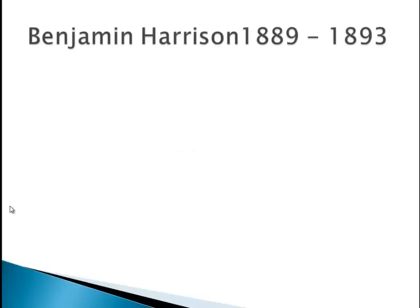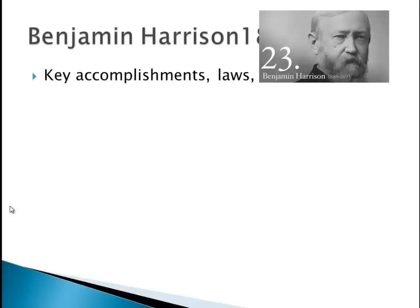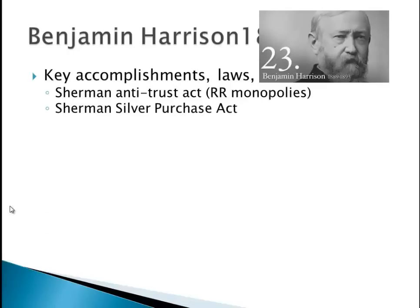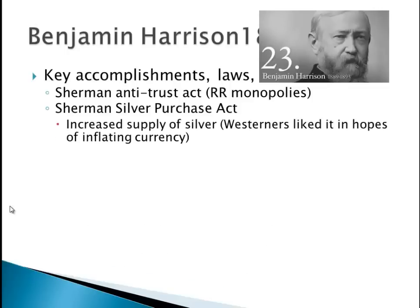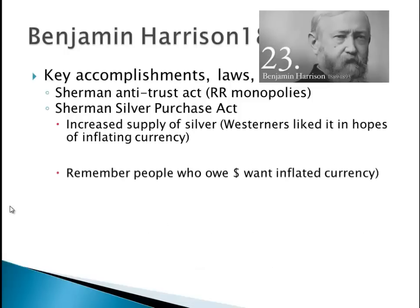Now we're going to talk about government of the 1890s. We have Benjamin Harrison — his grandfather, remember, was William Henry Harrison, Tippecanoe and Tyler too, the election of 1840. Key accomplishments under him: the Sherman Antitrust Act, which we talked about in chapter 25 — the first time the government ever tries to regulate an industry, and that industry is railroads. The other thing is the Sherman Silver Purchase Act. This increased the supply of silver, so instead of using just gold, the federal government would be buying silver as well, and more paper money is in circulation. This was a compromise to pass a tariff. Westerners, farmers, poor people in debt — they love this because it's easier to pay back money. For hard versus soft money, take a look at chapter 24.